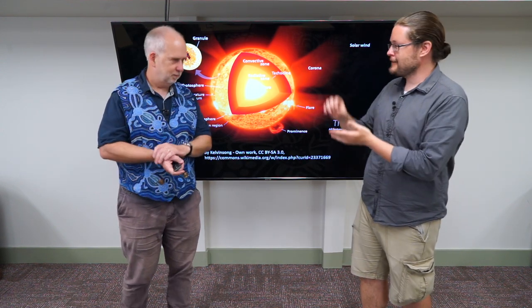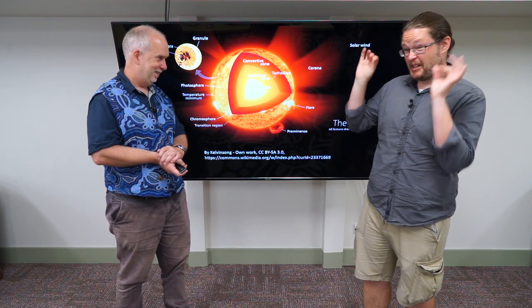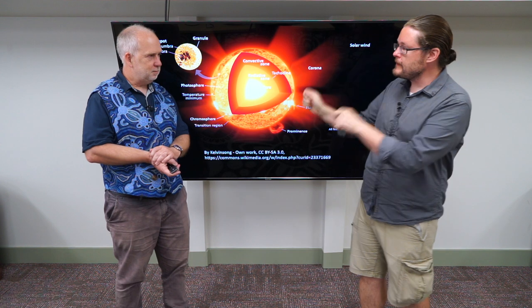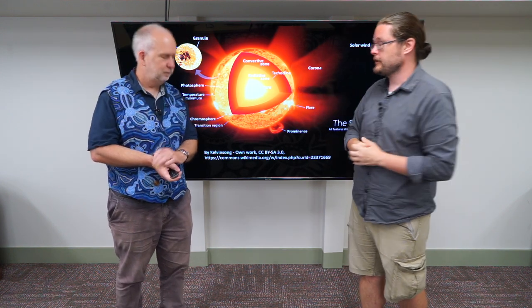So Paul, we have these meteorites that have these chondrules, that have these elements, that have these chain reactions, that gives us a really ridiculously accurate age. So how do we feed that in now to our model that we've talked about before of how the sun operates?